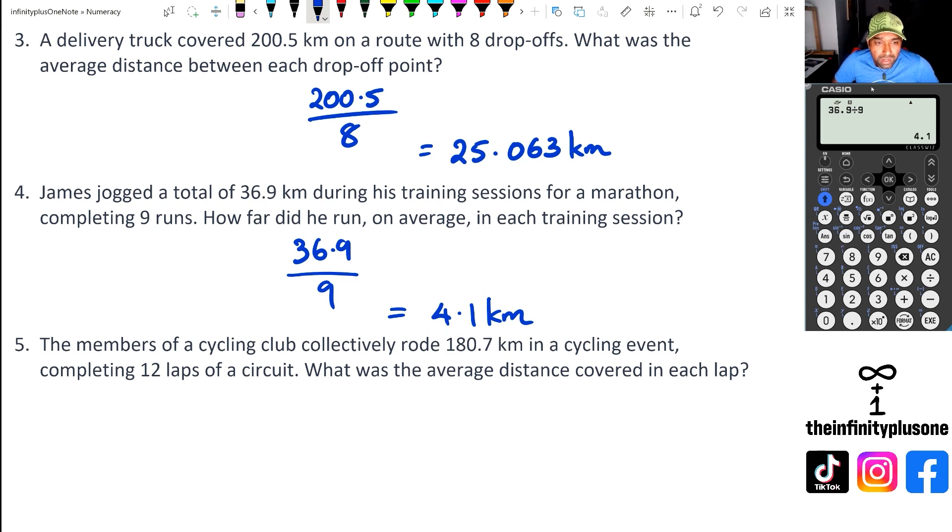And finally, looking at question five, we've got a cycling club collectively did 180.7 kilometers, completing 12 laps. So that's 12 laps, and we want to figure out what each lap is worth. So we've got 180.7 divided by 12. And there we go.